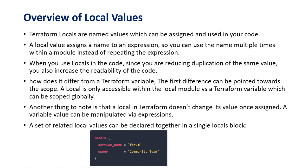Another difference is that locals in Terraform do not change their value once assigned, while a variable value can be manipulated by an expression. For example, if you have a local block with service_name equal to 'forum', you cannot modify that value at runtime — you cannot prompt for user input. As soon as you specify the value, it will be executed as-is when you run terraform apply.